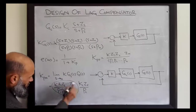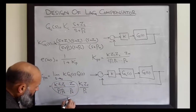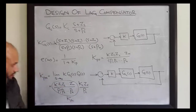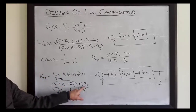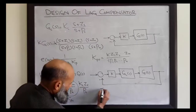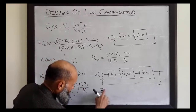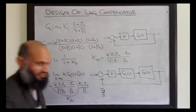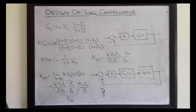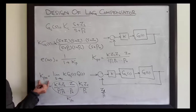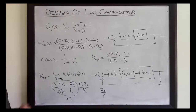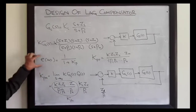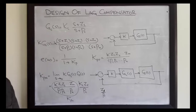This is the old value of Kp. If you select the ratio Zc over Pc to be larger, then the value of Kp will be increased. An increased value of Kp means the steady state error will be decreased.